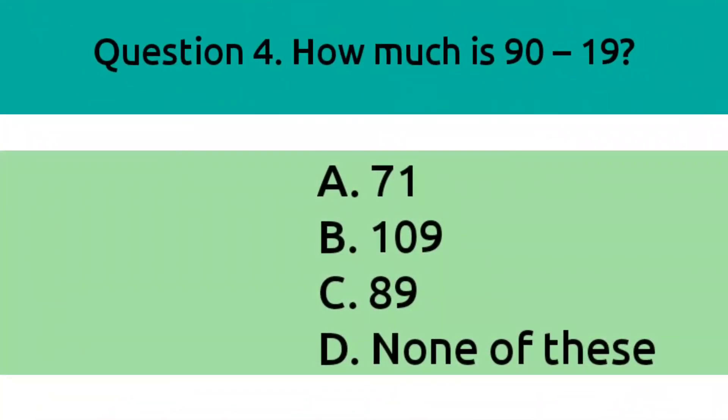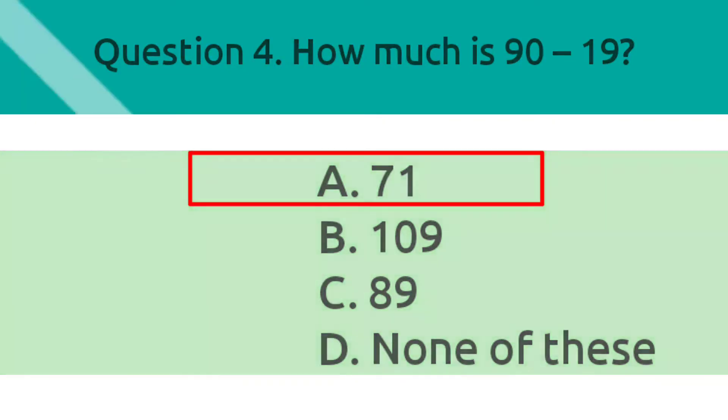Question 4. How much is 90 minus 19? Option A, 71. Option B, 109. Option C, 89. Option D, none of these. The correct answer is Option A, 71.